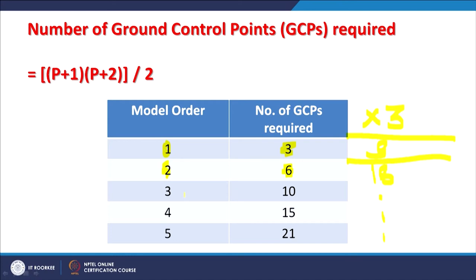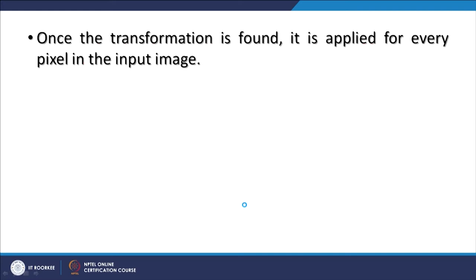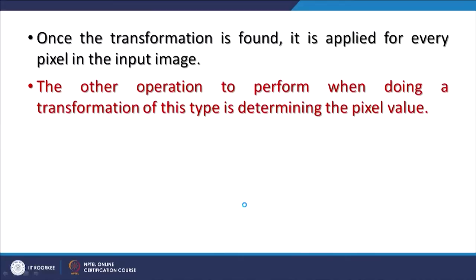If in a drone situation with high wind speed an image was still acquired, fourth order may be needed. But again, finding reliable common GCPs in both input and master images may be very challenging. One has to be very judicious about choosing the polynomial order and accordingly choosing very reliable common ground control points. Once the transformation is found, it is applied to every pixel — because now every pixel from the input image has to be transformed to a new location in what you can imagine as an empty wire mesh grid — and each cell of that grid must be filled with a pixel value.